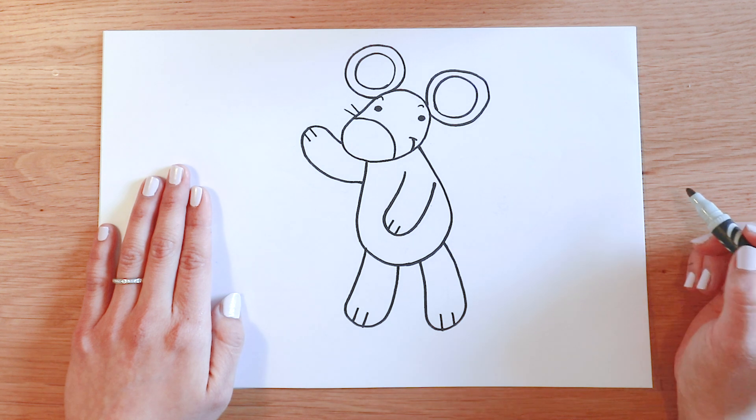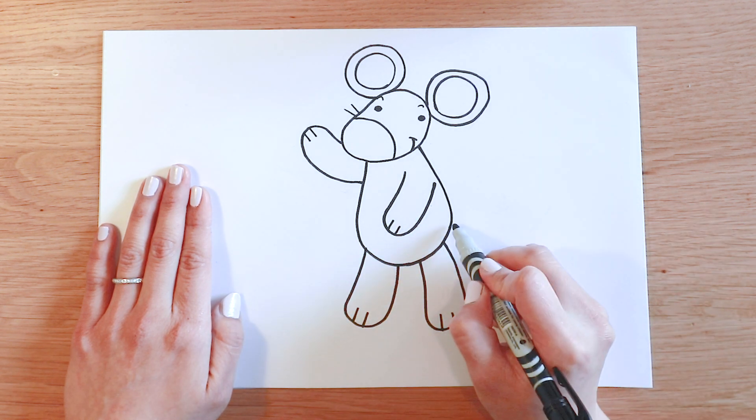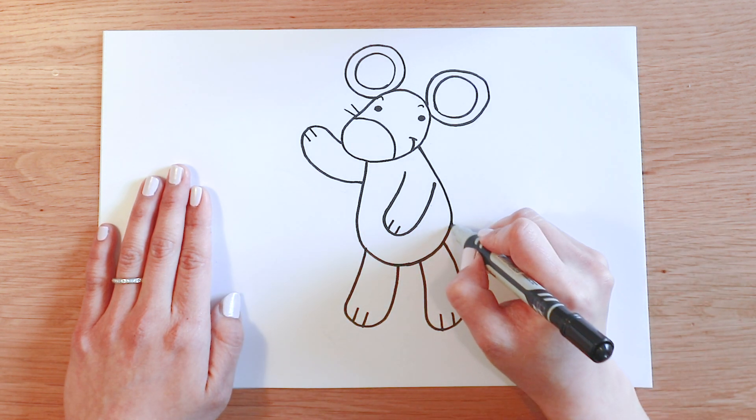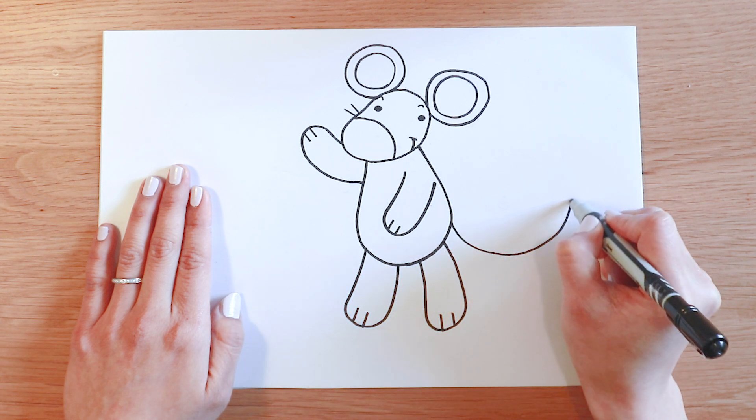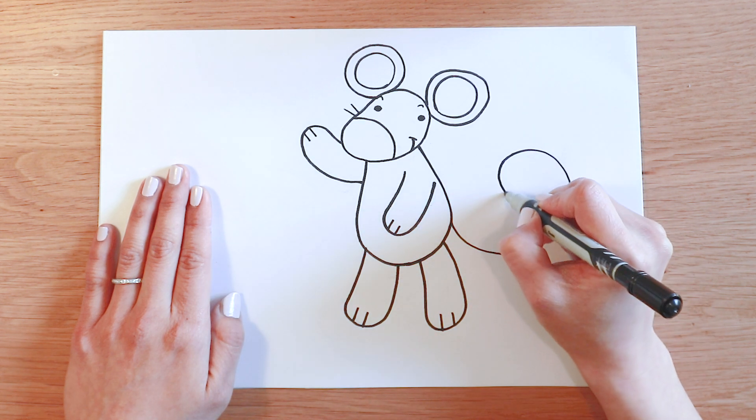Finally, I'm gonna draw Monty's tail. Start from down here. Curl around in a big swirl.